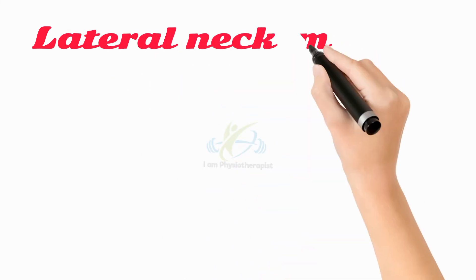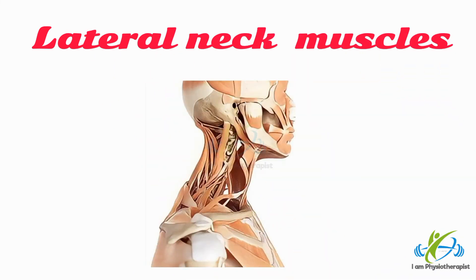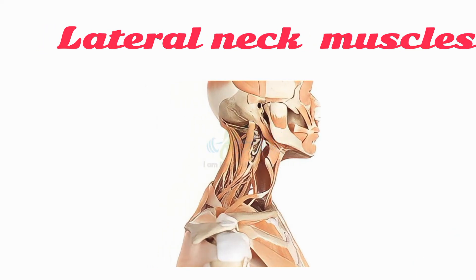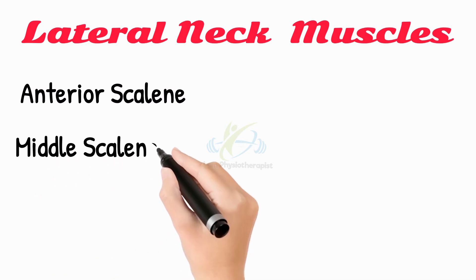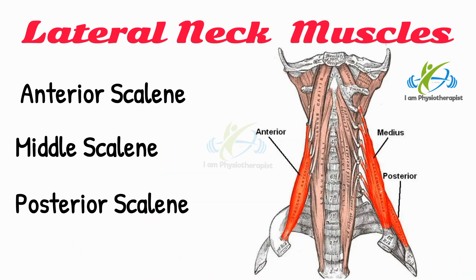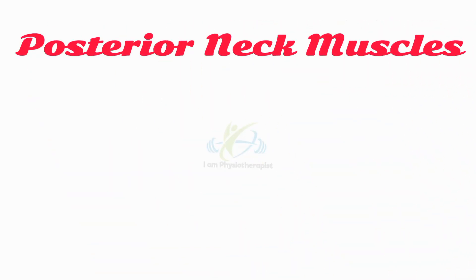The lateral neck muscles, also called lateral vertebral muscles, are a group of muscles that pass obliquely along the lateral sides of the neck. These include the anterior, middle, and posterior scalene muscles. These muscles mainly produce ipsilateral flexion of the neck.